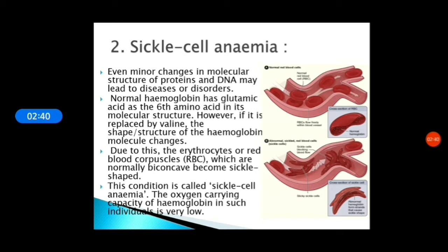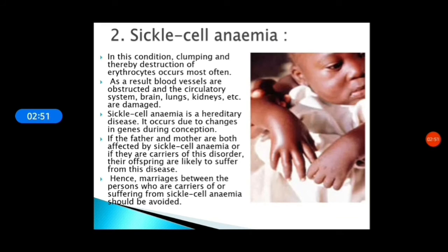This condition is called sickle cell anemia. The oxygen-carrying capacity of hemoglobin in such cells is very low. Due to this, clumping and thereby destruction of erythrocytes occurs most often. As a result, blood vessels are obstructed and the circulatory system, brain, lungs, kidneys, etc. are damaged. Sickle cell anemia is a hereditary disease — it occurs due to changes in genes during conception. If a father and mother are both affected by sickle cell anemia or if they are carriers of this disorder, their offspring are likely to suffer from this disease.